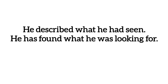Chaliye ab hum iske do examples kar lete hai jisse aapko ye concept aur clear hoga. 'He described what he had seen' — usne woh describe kiya tha jisse usne dekha tha. Yahan par antecedent missing hai, yani ki noun missing hai jiske liye 'what' word use hua hai.